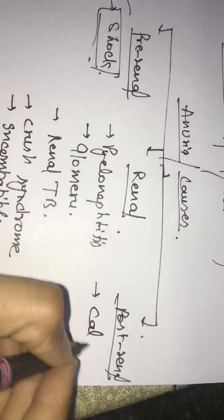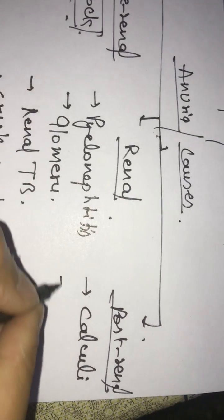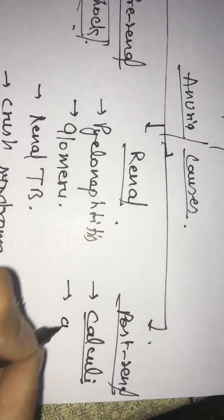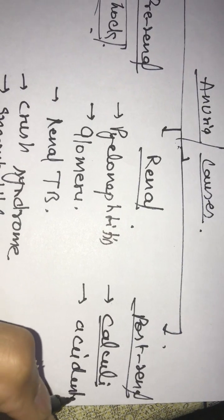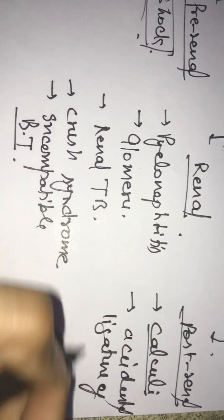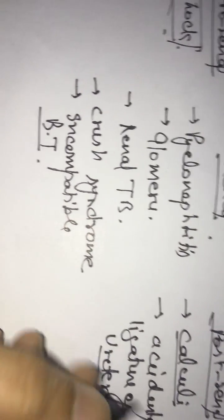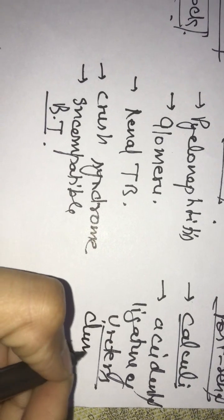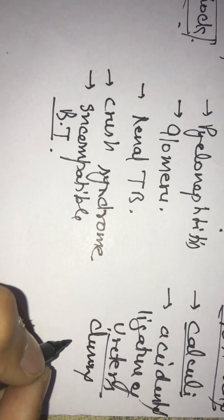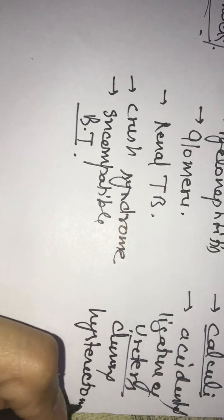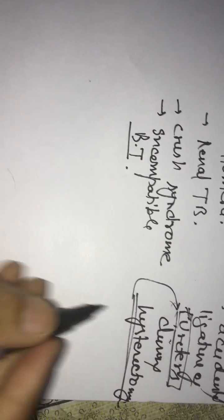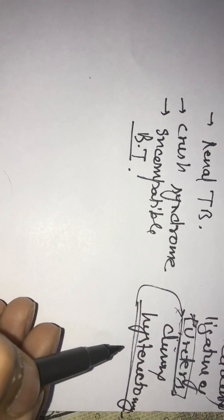When we talk about post-renal, we can have any obstruction — like calculi in the kidney, or kidney calculus. Or during an operation, accidental ligature of the ureter. The most common cause is during hysterectomy. When the uterus is removed, by mistake the ureter is sometimes ligated accidentally, and due to that, there can be anuria in the patient.